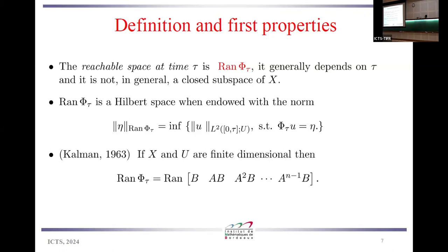Determining this space is in general not an easy task. What we can say in a very general setting is that for every tau, this space can be endowed with a Hilbert space structure, if I define a norm. This norm is the norm of the minimal L2 control — some call it the HUM control — which allows us to reach eta in time tau. A priori it's an infimum, but we will see that in most situations it will be a minimum.